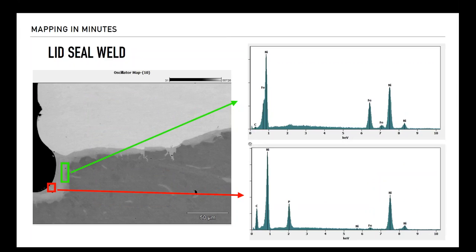This next slide illustrates the nickel-phosphorus domain versus the nickel-iron diffusion region in greater detail.